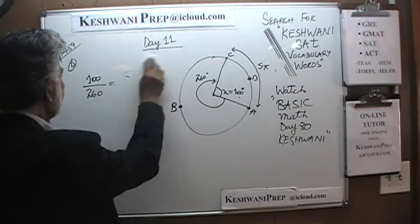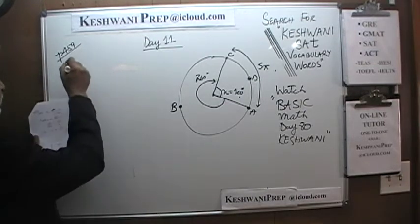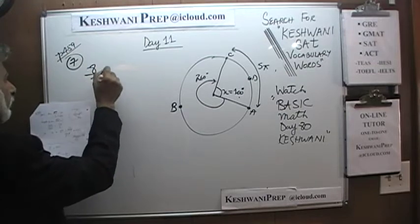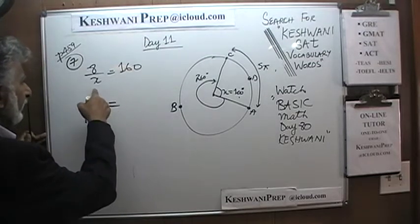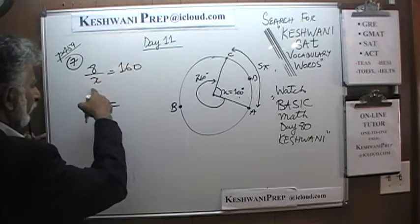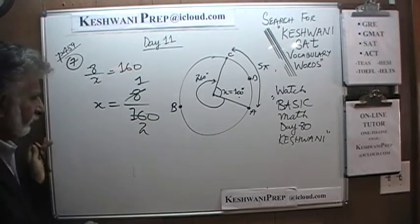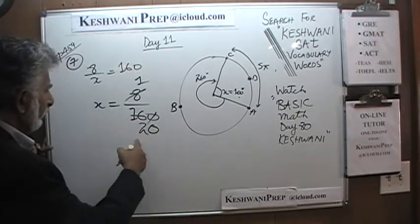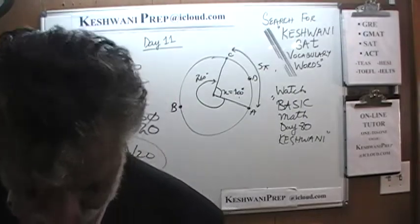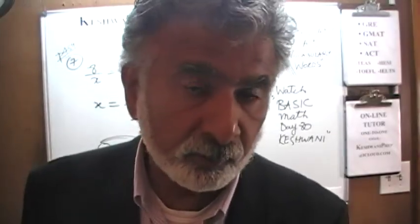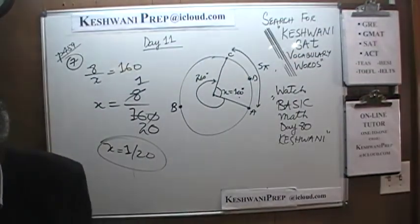Number 7 is very simple. They want you to find x — just cross multiply, bring x to the top and 160 at the bottom, giving 8 over 160. Dividing top and bottom by 8 gives 1 over 20. Since all the other answer choices are whole numbers and there is only one answer with a decimal, that's your answer: 0.05.